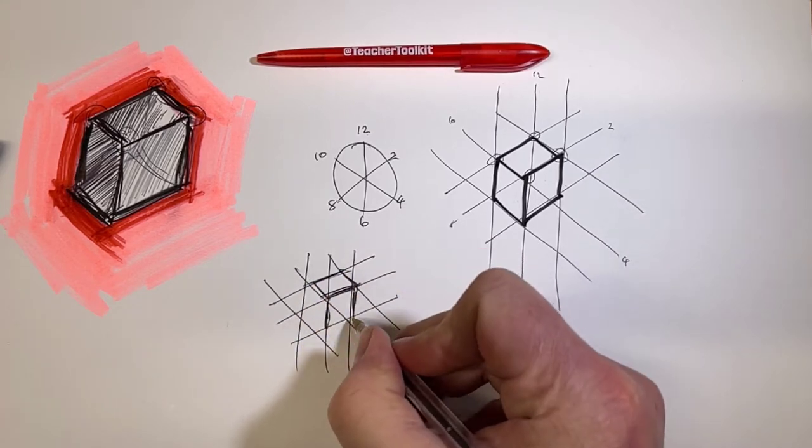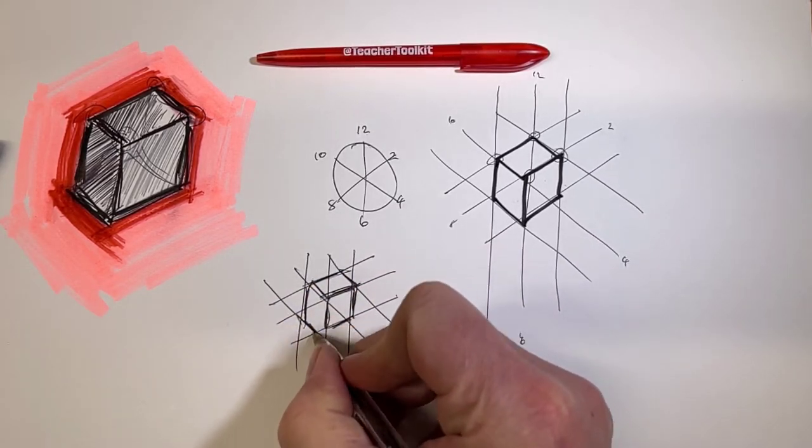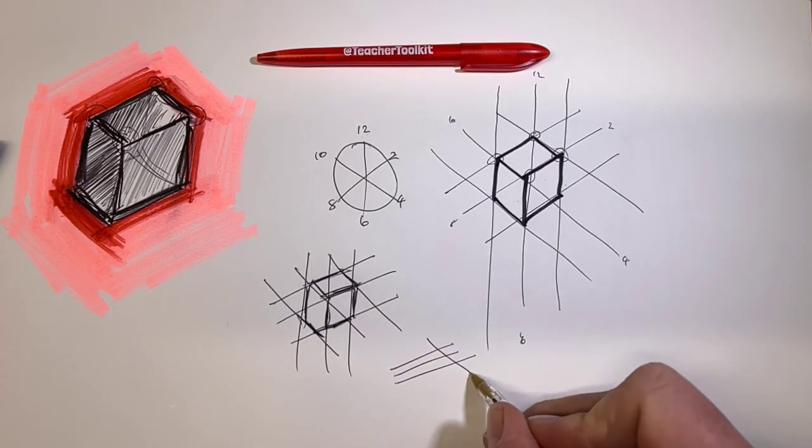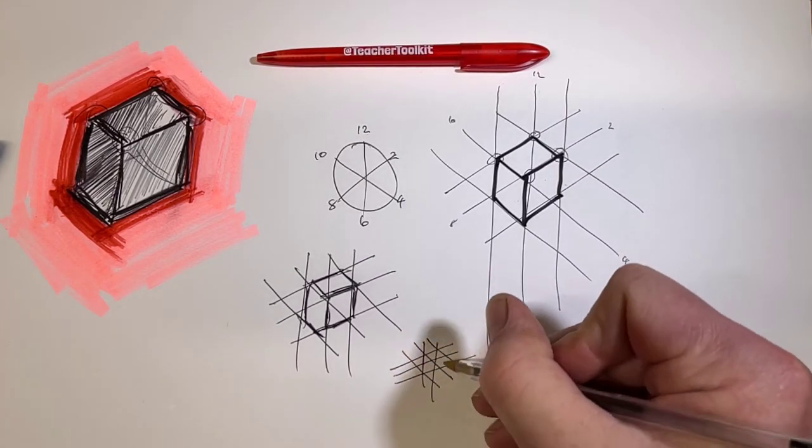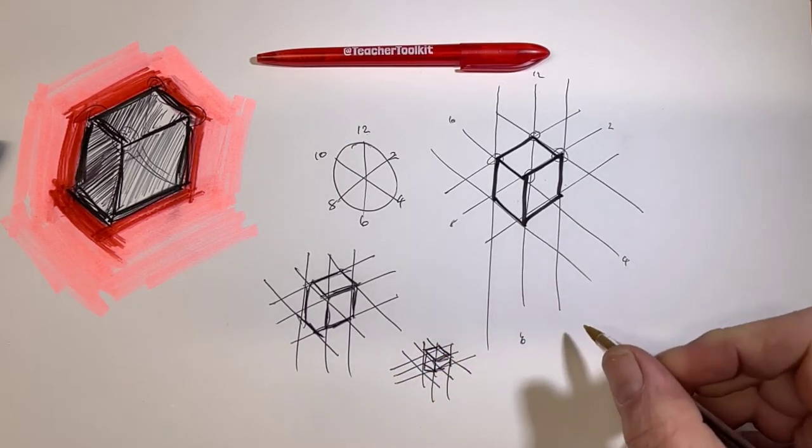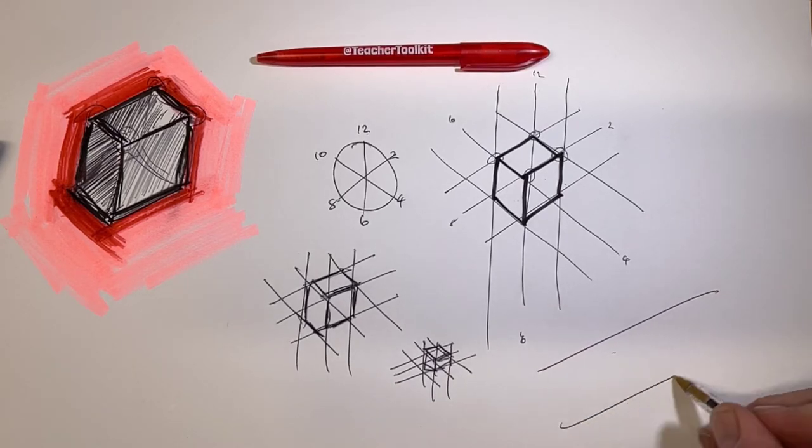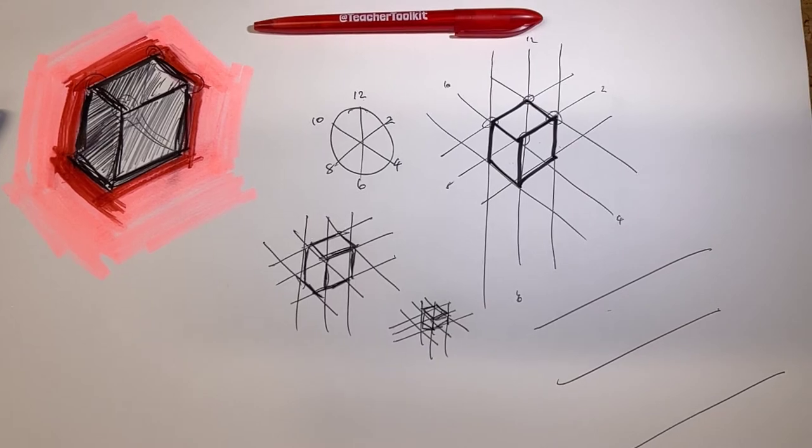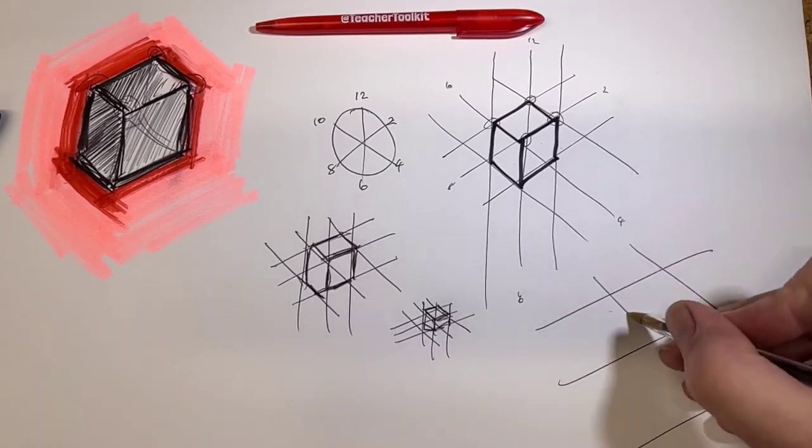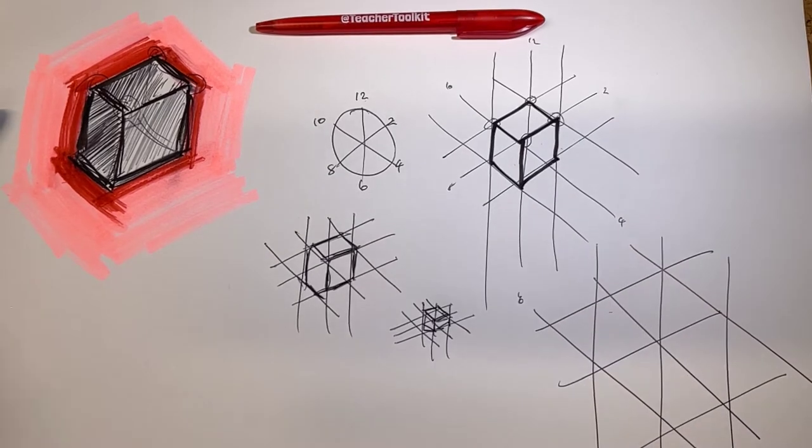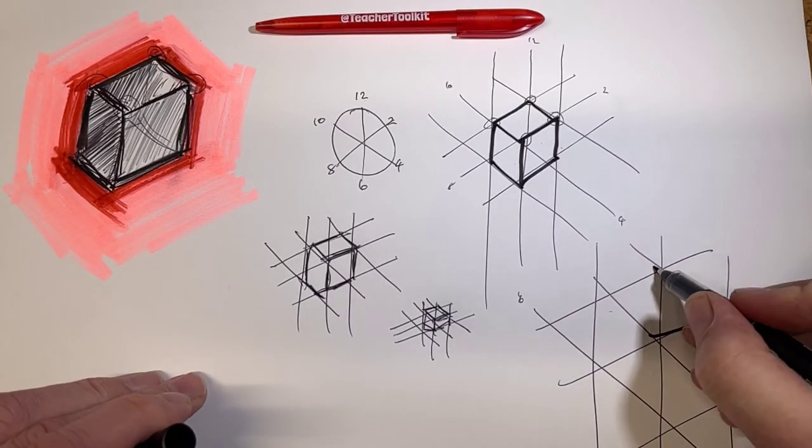I'll just draw a couple of examples, and then to take the process further, the closer your lines together, the smaller the cube becomes. The wider the lines, let's try and see if I can fit this in the video. Let me just move my camera slightly. The wider the lines, the larger the cube.